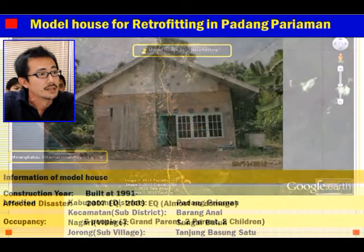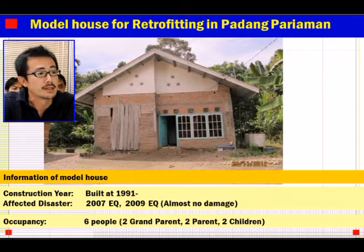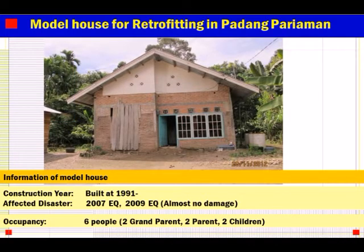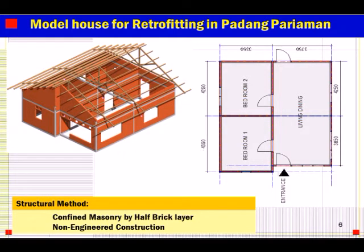This is the house for the retrofitting project. It was constructed in 1991. There were two big earthquakes — 2007 and 2009 — but this house had no damage. The occupancy is two grandparents, two parents, two aunts, and two children. The structural method is non-engineered construction. The plan shows the biggest wall span is around 4.3 meters, and the shorter direction is 3.3 meters.